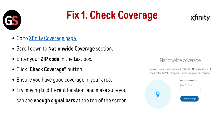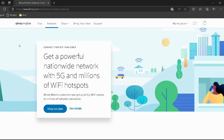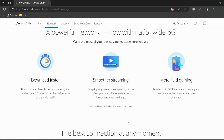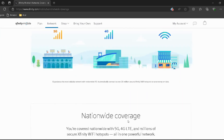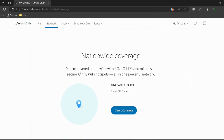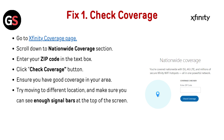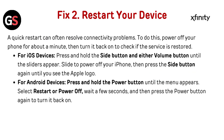Fix 1: Check coverage. Go to the Xfinity coverage page — I have provided the link in the description. Scroll down to the nationwide coverage section, enter your zip code in the text box, and click the Check Coverage button. Ensure you have good coverage in your area. Try moving to a different location and make sure you can see enough signal bars at the top of the screen.